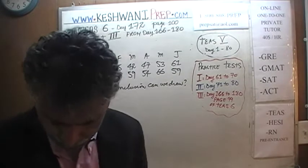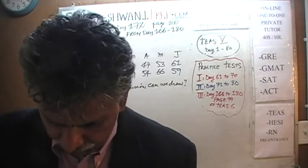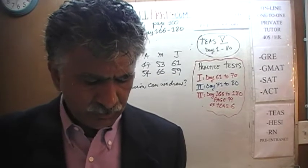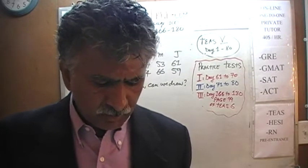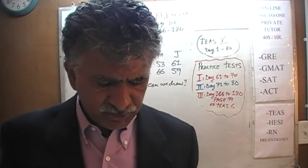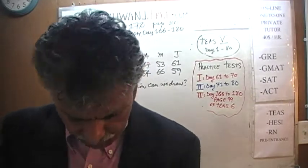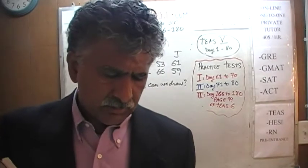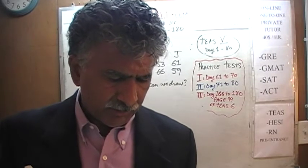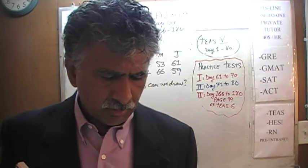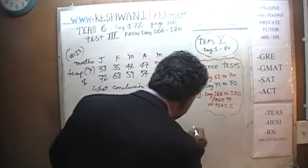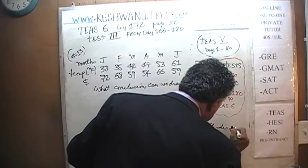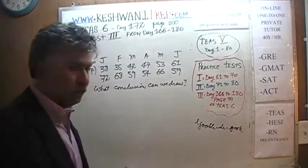Let's look at answer choice A. In answer choice A, they add up all the dollar amounts and tell you that equals the average rate of change. Now, that's absolute gobbledygook — yes, that is the real word, double-b, hyphenated twice — which means nonsense.